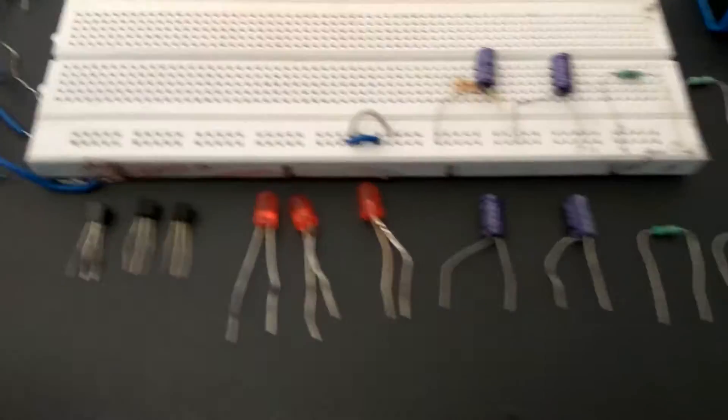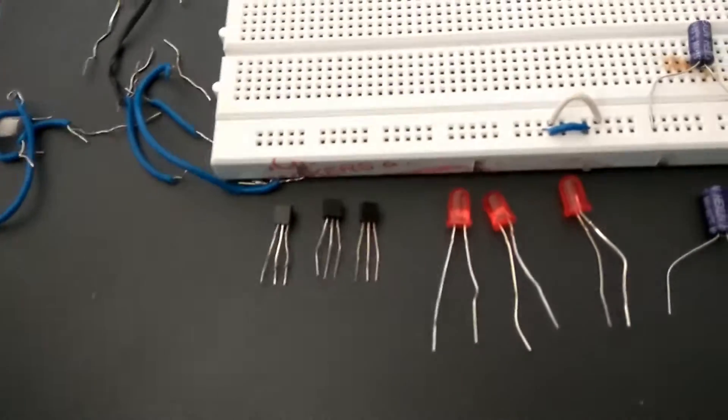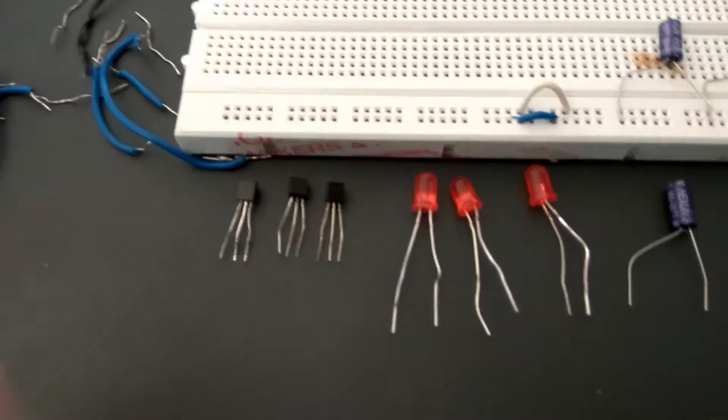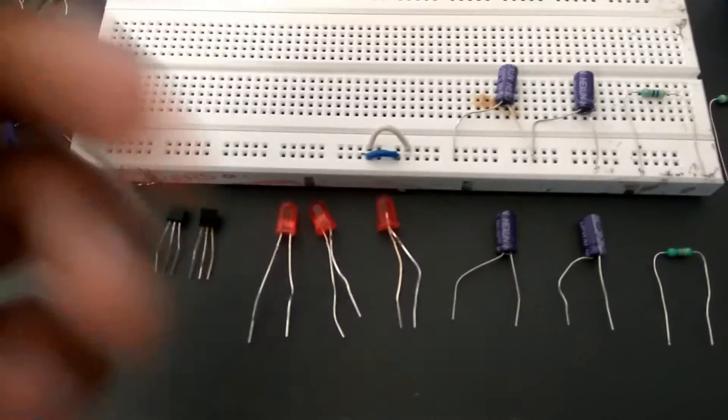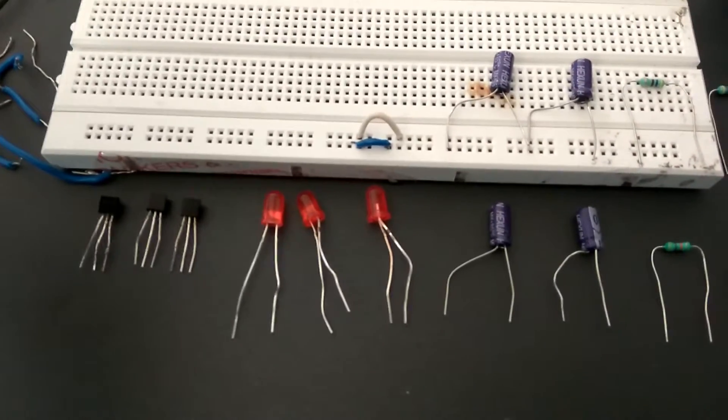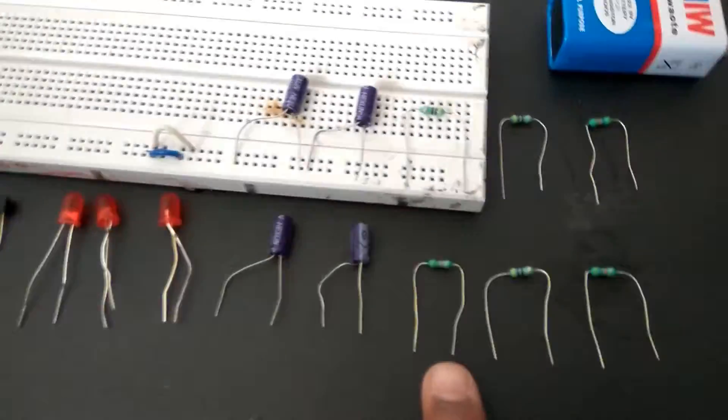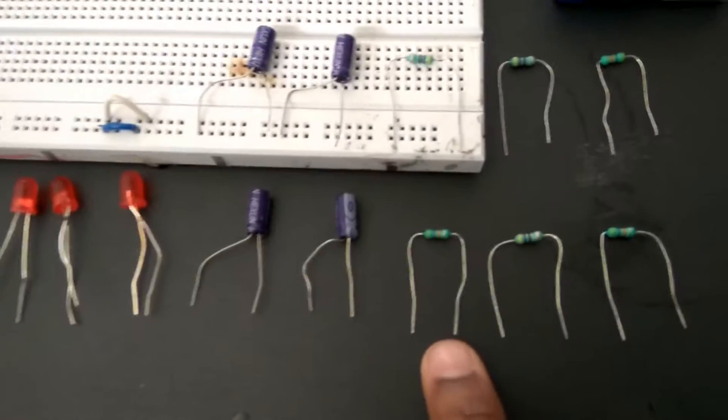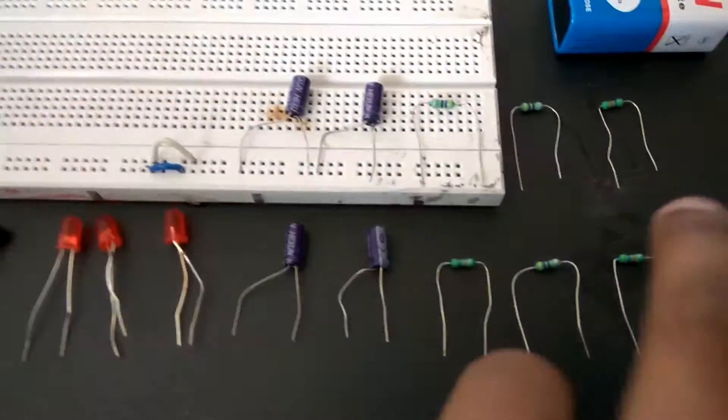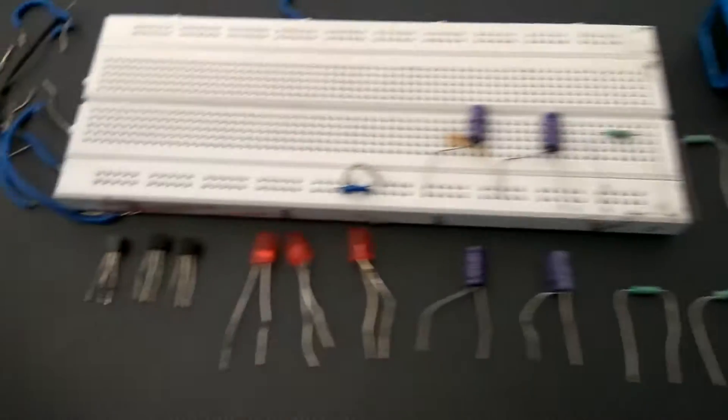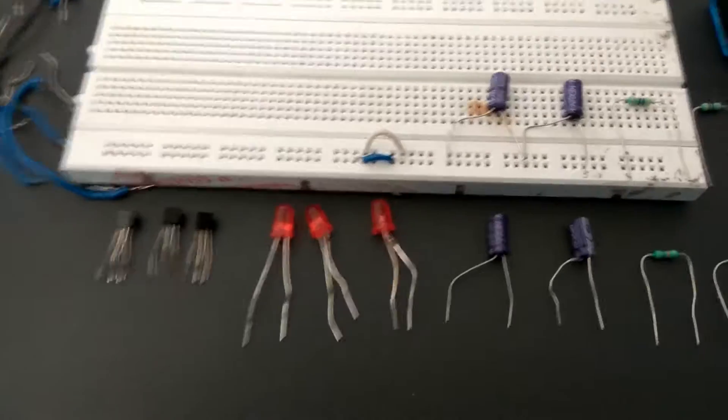The materials required are: 3 NPN bipolar junction transistors, 3 LEDs, 4 polarized electrolytic capacitors between 10 and 47 microfarads, 6 resistors (3 of 47k ohms and 3 of 470 ohms), a 9 volt battery, breadboard, and connectors.